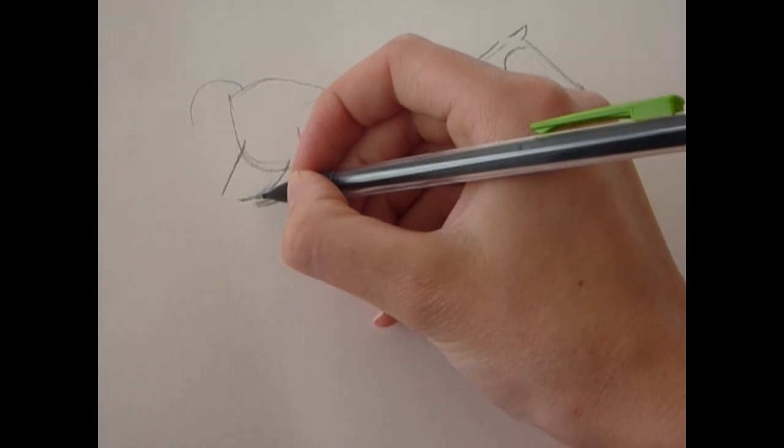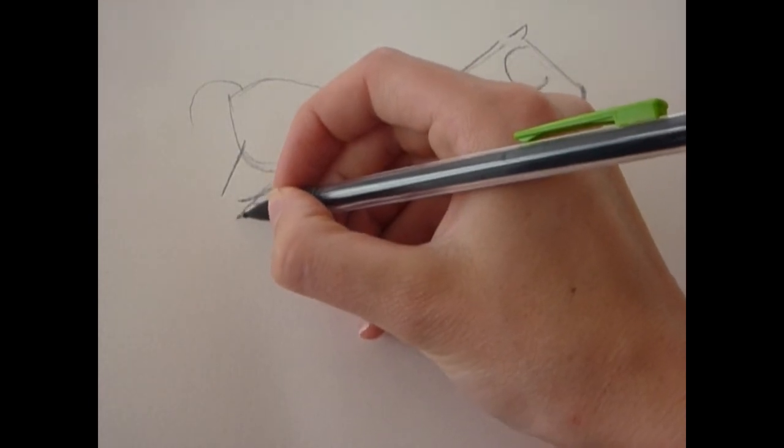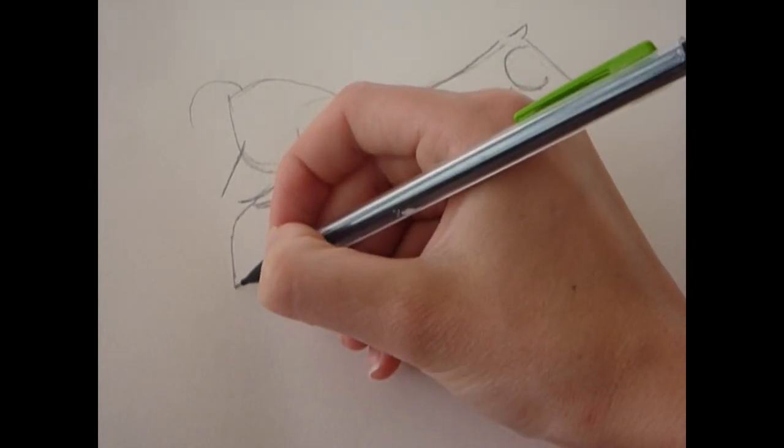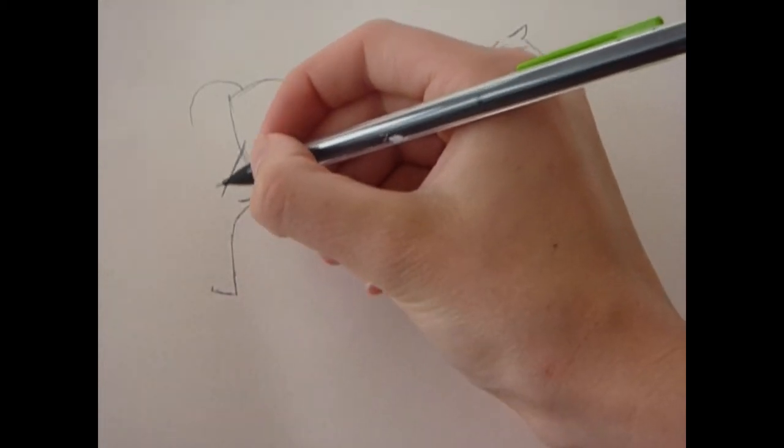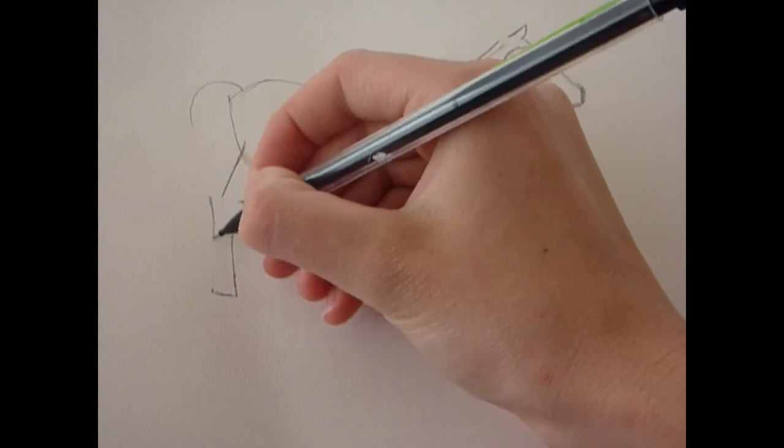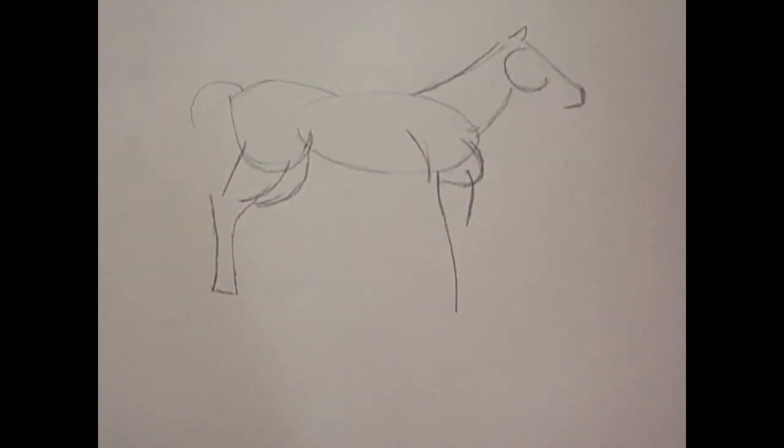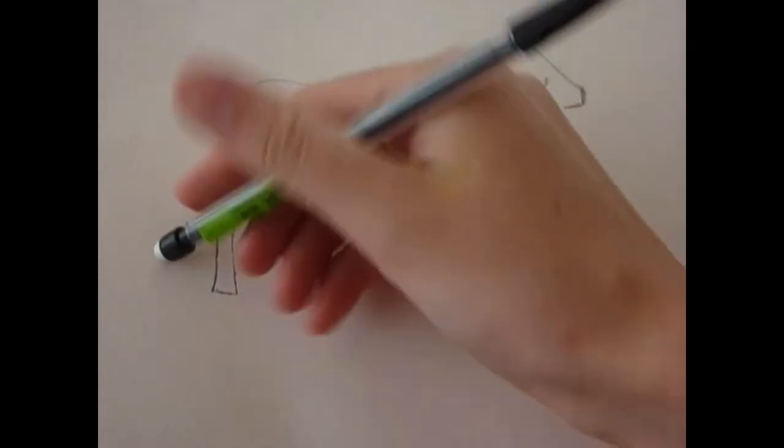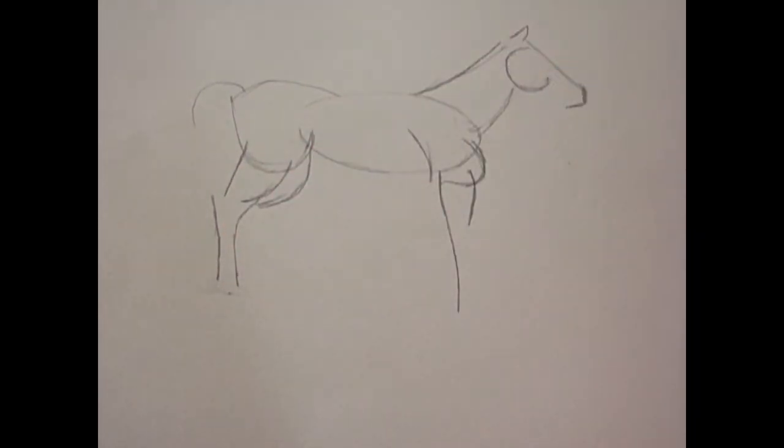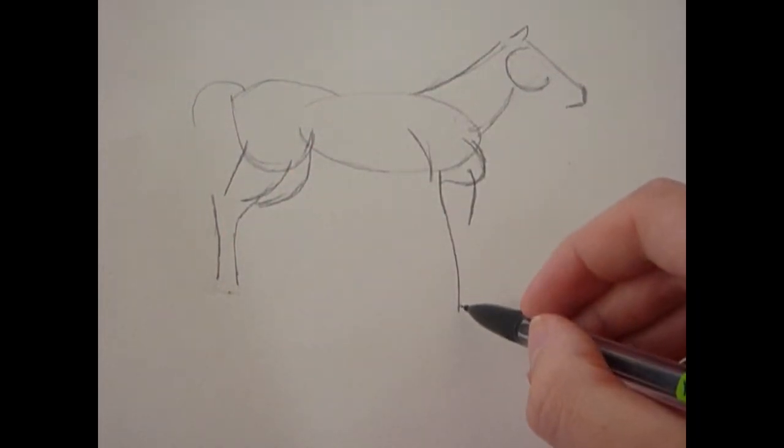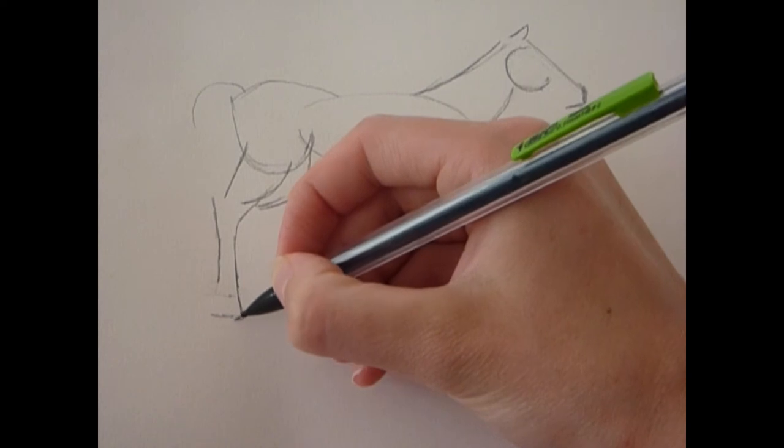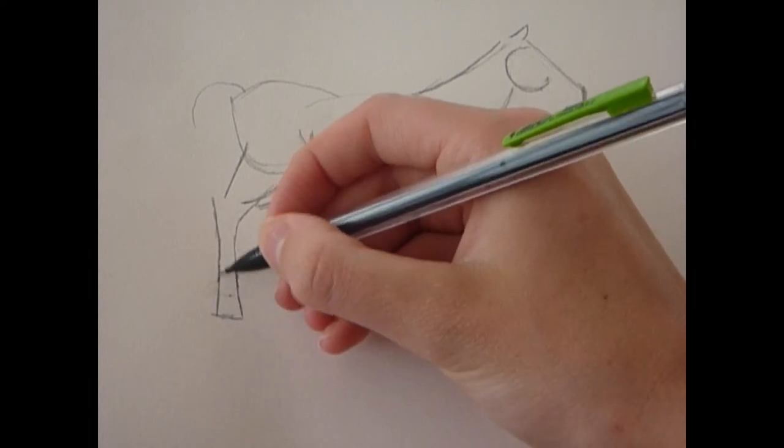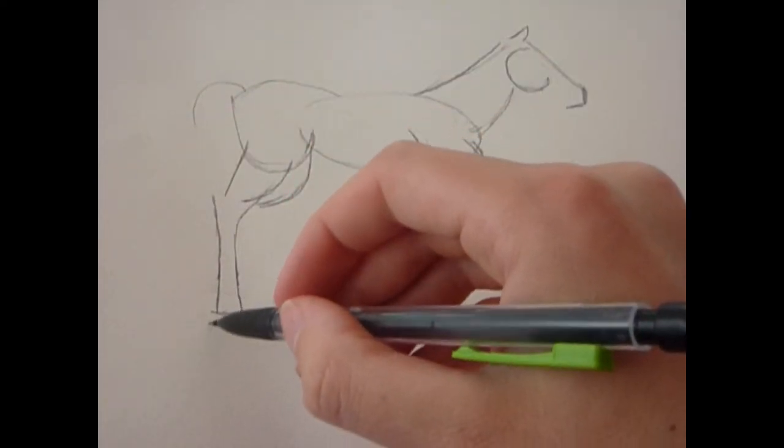Then come over back to the legs. This isn't a hoof, so don't have to make it too long. Actually, I'm just going to make that a bit longer so it's kind of in line with this one here. And a bit wider at the end as well.